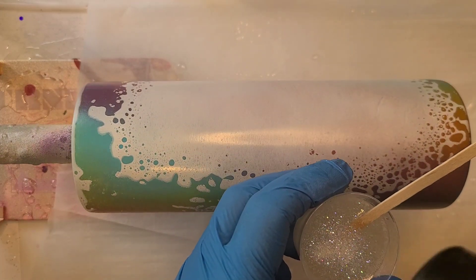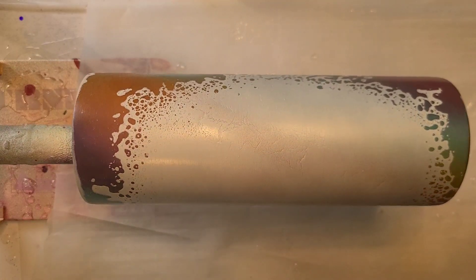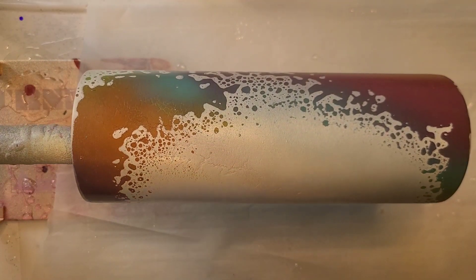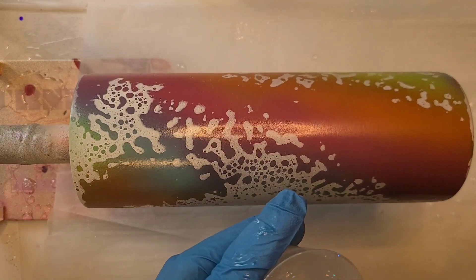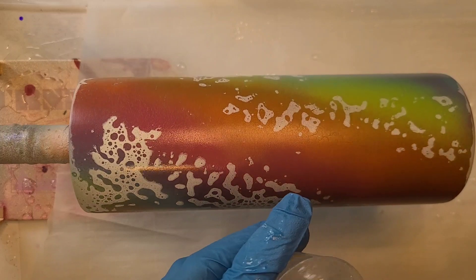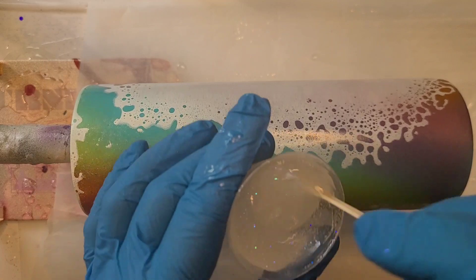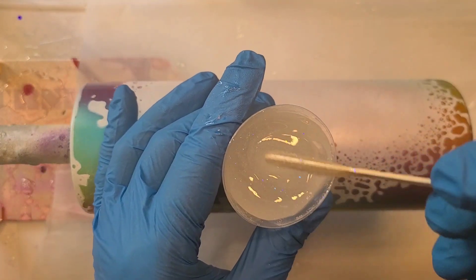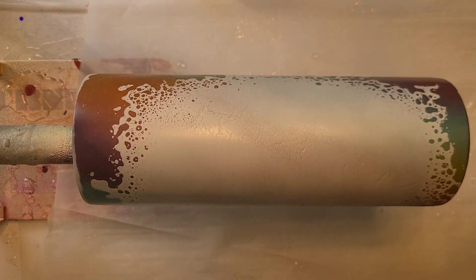My epoxy is relatively bubbly just because, even though it's super warm out today, it's chilly in my craft room. So I will give it a good torch and that will take those bubbles out and it'll be fine. So I'm just going to mix that in and get it on the coat.